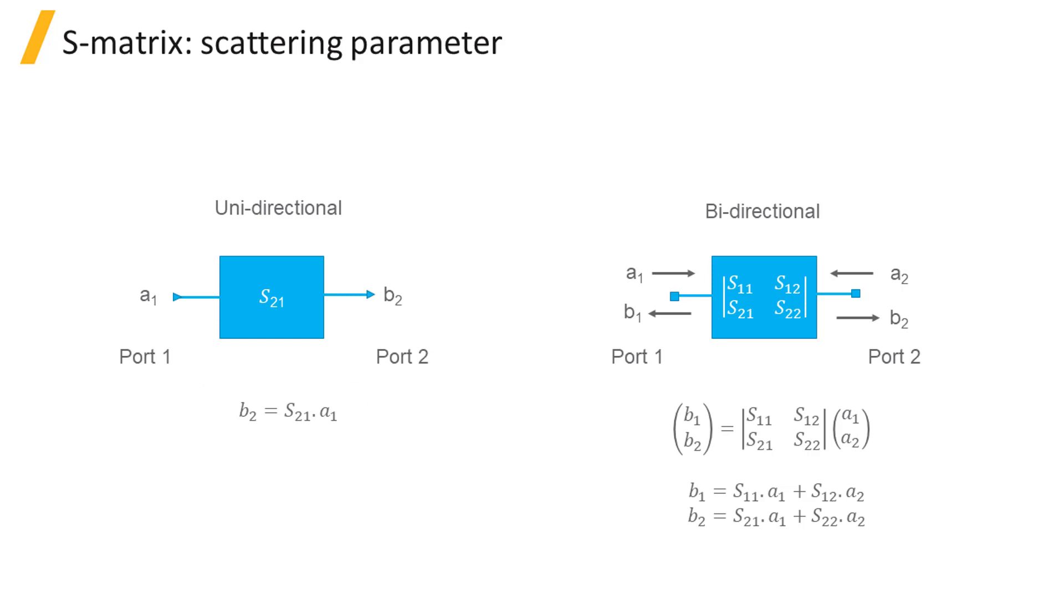For a bidirectional 2-port element supporting a single mode at either port, the scattering parameters create an S-matrix as shown in the diagram on the right. The equations shown here describe how the outgoing signals are calculated from the incoming signals by using the S-matrix. For example, B1 is the sum of the reflected signal at port 1, which is proportional to A1, and the signal transmitted from port 2, which is proportional to A2.